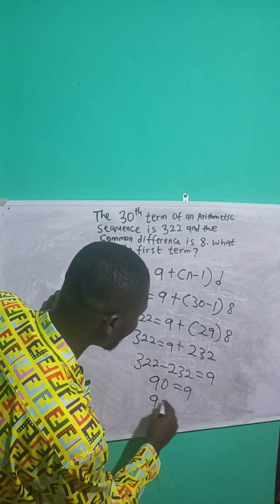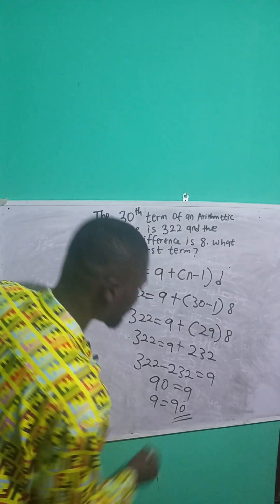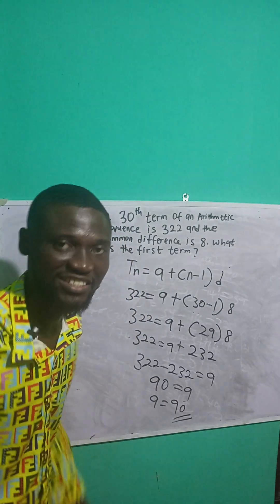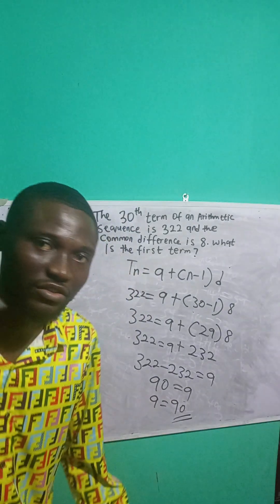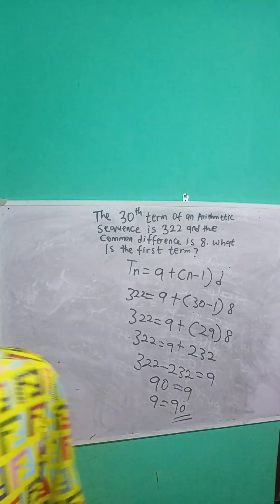So a is 90. The first term here is 90. See you in the next video. Please subscribe. Be great.